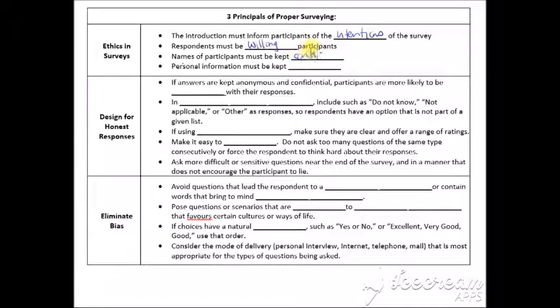So you can't hold somebody against their will. They have to want to do it. Names of the participants must be confidential. So sometimes, most times you don't even ask for it. Confidential. And personal information must be kept private as well. Design for honest responses. So that's a big thing. You don't want people doing your survey and then lying because then the results are inaccurate.